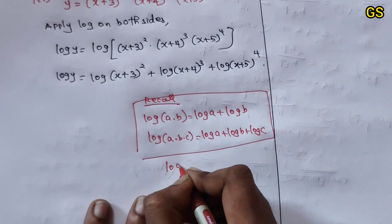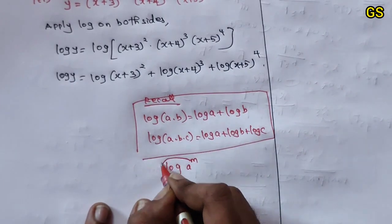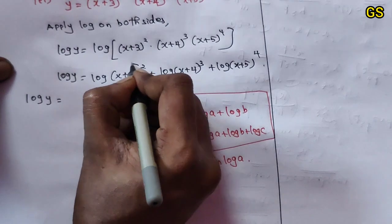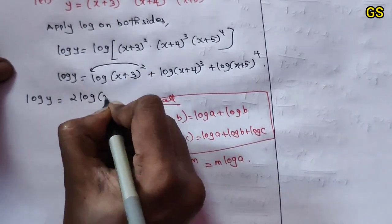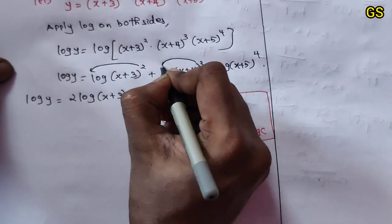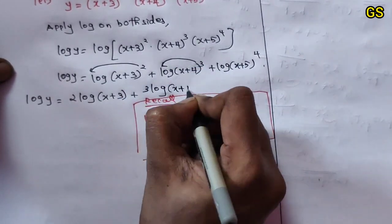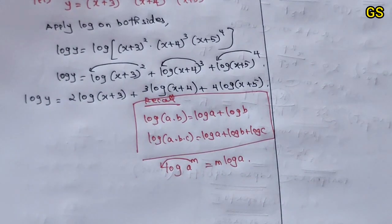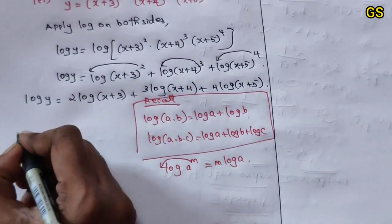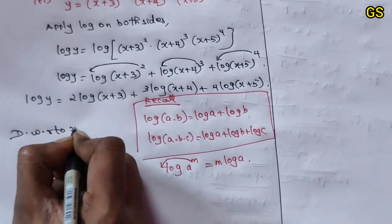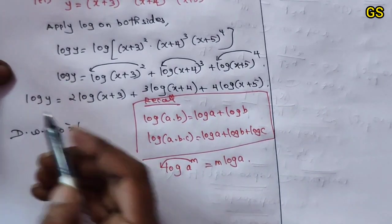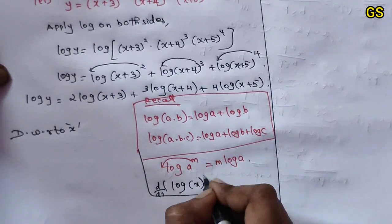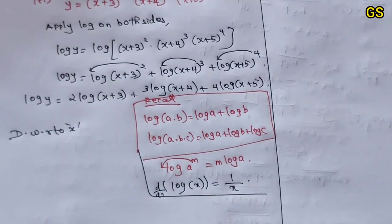Recall the log power property: log of a power m equals m into log a. So applying this property: log y equals 2·log(x+3) plus 3·log(x+4) plus 4·log(x+5). Now recall the differentiation formula: d/dx of log x equals 1 by x.